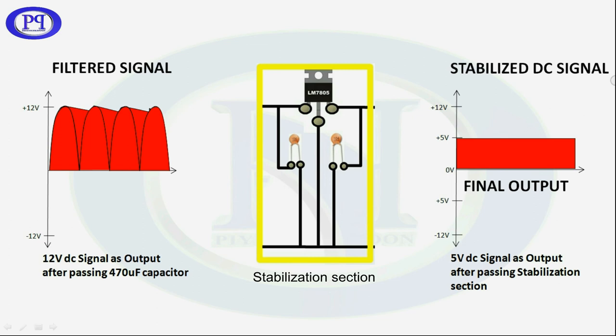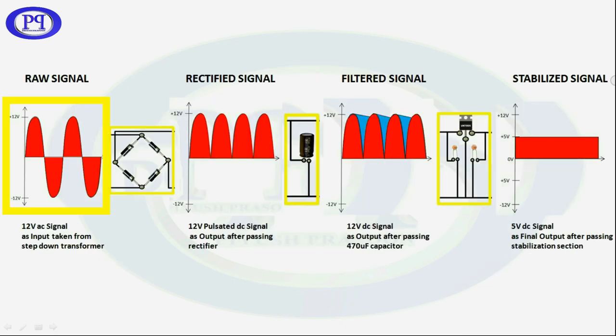So now let's have a quick view on how the signals are getting converted. Here you can see the AC signal is entering rectification section and further it got converted into pulsated DC signal, which further acts as an input to filter and gives us an unstable DC signal.